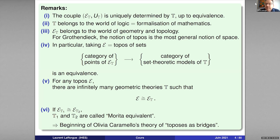So on one side of the theorem, you have formalized mathematics — a linguistic presentation of some theory. And on the other side of the theorem, you have an associated topos, the so-called classifying topos of T, which belongs to the world of geometry and topology. For Grothendieck, I repeat, the notion of topos was the most general notion of space.